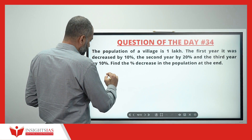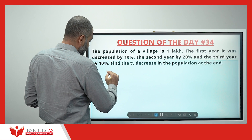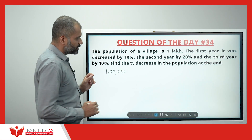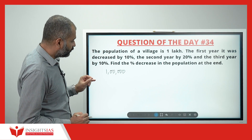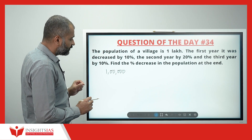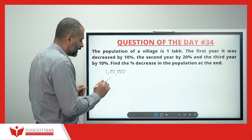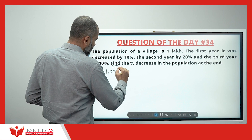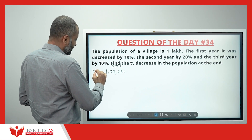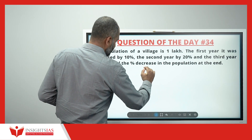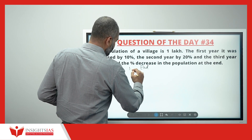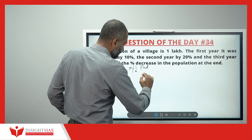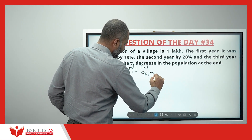Originally the population was 1 lakh. This is a very easy question, but I will show you one technique which is very simple to understand and also to solve — you can save a lot of time. 1 lakh is the initial population at the starting of the first year. At the end it is decreased by 10%, so 10% of 1 lakh is 10,000. If you decrease it by 10,000, it becomes 90,000.